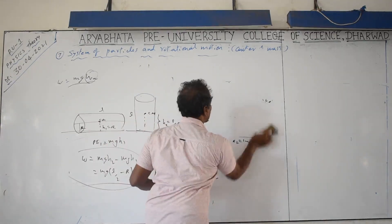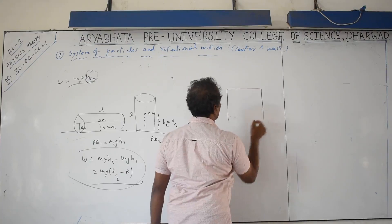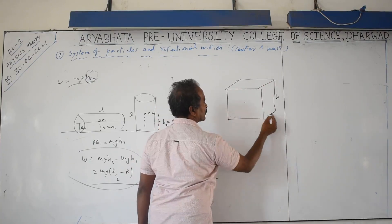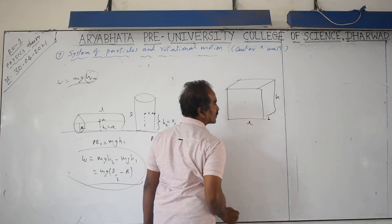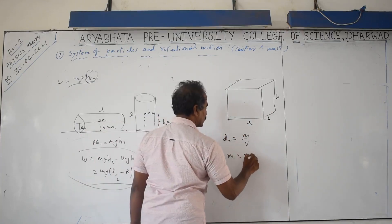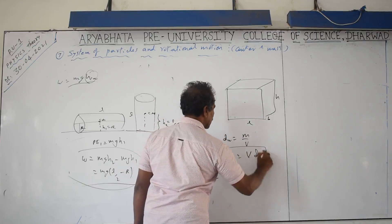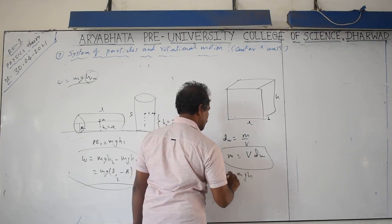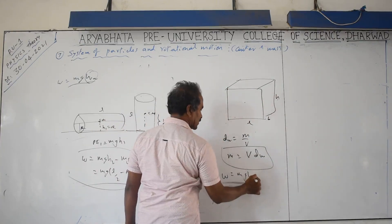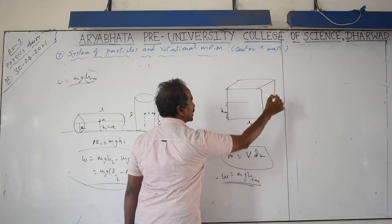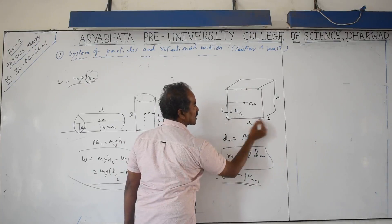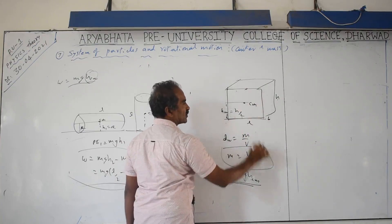For filling a water tank of height h on the ground: work done = mgh, but you must use the height of the center of mass, which is h/2. The mass of water equals volume × density. Since the water at the bottom is lifted zero height and water at the top is lifted maximum height h, the average height is h/2.